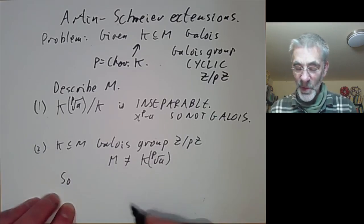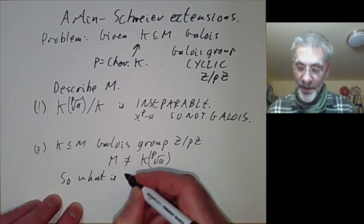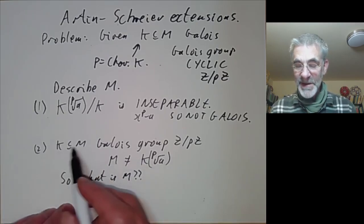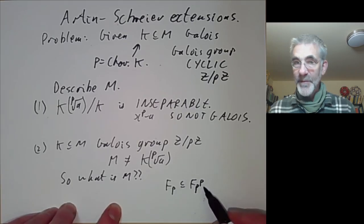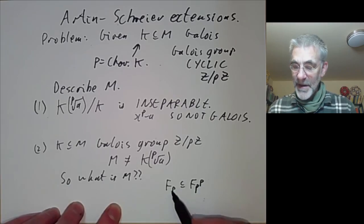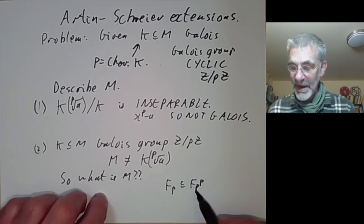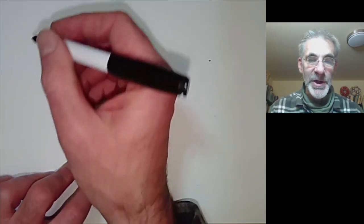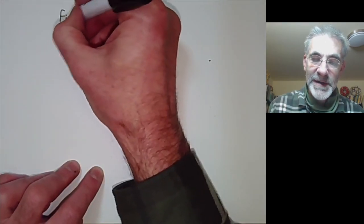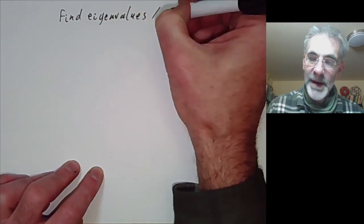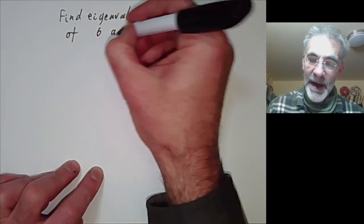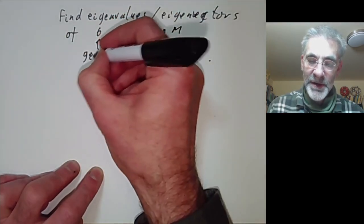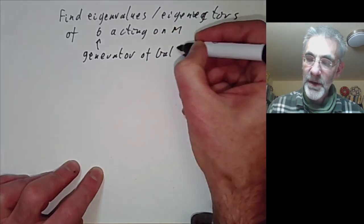So if M is not given by taking a radical of something, we can ask what M is. Notice that such extensions are quite common. For example, if we take a finite field of characteristic P, this is contained in the field of order P^P, and this extension has degree P and is in characteristic P. So how are we going to construct M? In the previous lecture we looked at eigenvectors and eigenvalues, so let's try the same. We want to find eigenvalues and eigenvectors of sigma acting on M, where sigma is a generator of the Galois group of M over K.